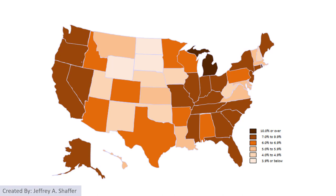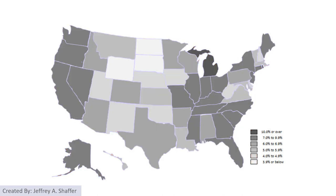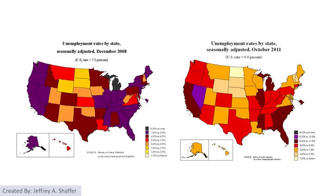This is a better design where the sequential color going from light to dark is much easier to understand the data. Or we can just not use color at all — just use grayscale to represent the data.